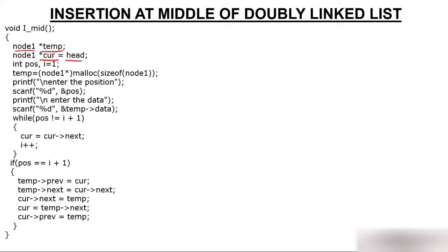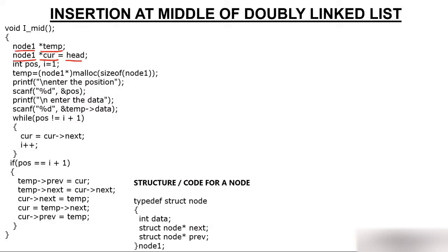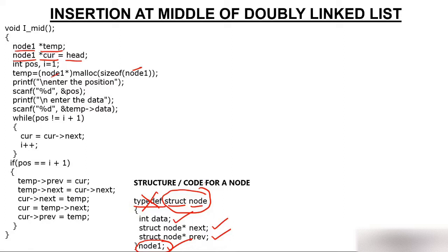The data type of these pointers is node1. When we created the doubly linked list, we defined a structure named node having 3 parts: data, address of next, and address of previous. We then created a structure variable node1 and used typedef so that node1 represents the entire structure. Without typedef, we would have to write the complete 'struct node' everywhere. Using node1 — or any alias like A — simplifies the code.